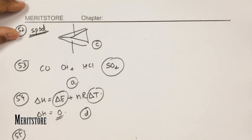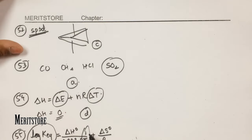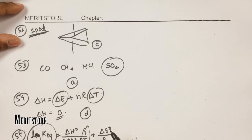Question number 55: the schematic plot of ln K (equilibrium) versus temperature is given and we must determine the reaction type. Using log K = −ΔH°/(2.303RT) + ΔS°/R, the plot of log K vs 1/T shows a positive slope. If the slope is positive, then ΔH must be negative, meaning the reaction is exothermic in nature. Therefore option D.